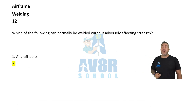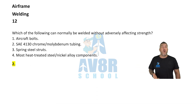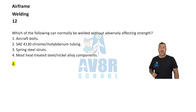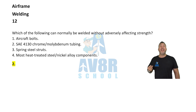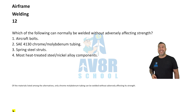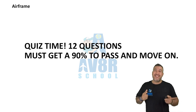Number twelve: Which of the following can normally be welded without adversely affecting strength? SAE 4130 chrome-molybdenum tubing. Take your first quiz and I'll see you soon.